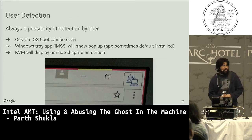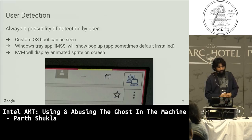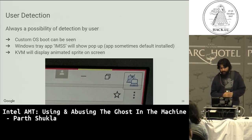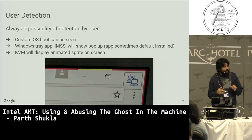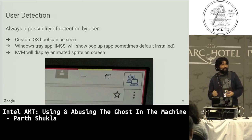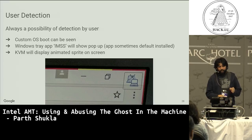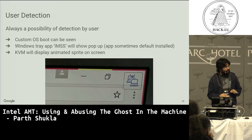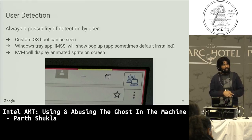There's also detection by the user since you are doing KVM. A custom OS boot can be seen if the user is sitting in front of the screen. There is a Windows tray app called IMSS which will show a popup whenever AMT is provisioned or any AMT-related action is performed — sometimes installed by default, but enterprises rolling custom images may remove it. It's also unknown if users will even notice the popups. Finally, KVM will always display an animated sprite on screen to warn users — this cannot be disabled. In client control mode, you can't initiate KVM without user consent; in admin control mode, you can.